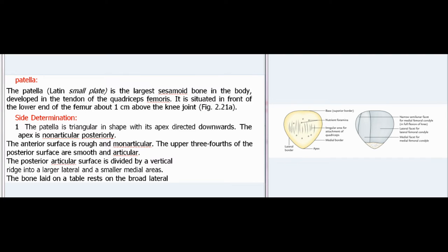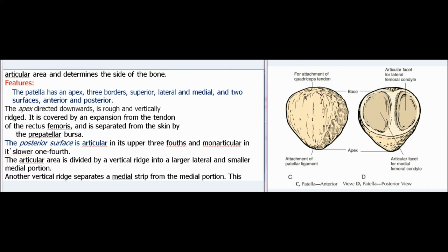The patella (Latin: small plate) is the largest sesamoid bone in the body, developed in the tendon of the quadriceps femoris. It is situated in front of the lower end of the femur, about 1 cm above the knee joint. Side determination: The patella is triangular with its apex directed downwards. The apex is non-articular posteriorly. The anterior surface is rough and non-articular. The upper three-fourths of the posterior surface are smooth and articular; this articular surface is divided by a vertical ridge into a larger lateral and a smaller medial area. The bone rests on the broad lateral articular area when laid on a table, determining the side. The patella has an apex, three borders (superior, lateral, and medial), and two surfaces (anterior and posterior).